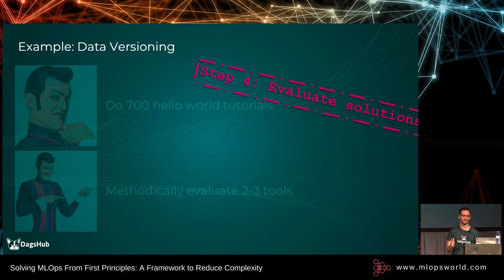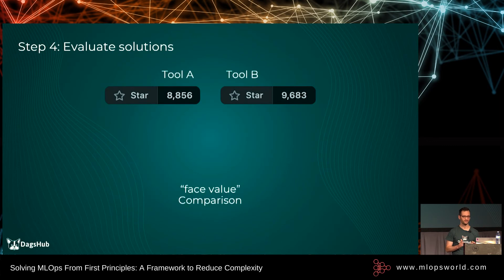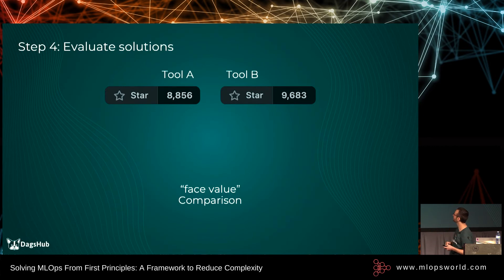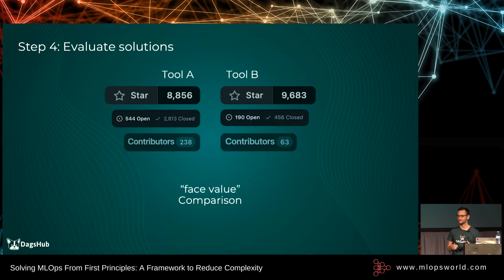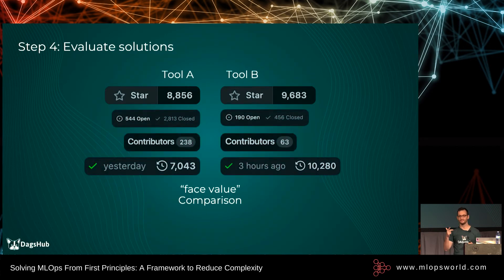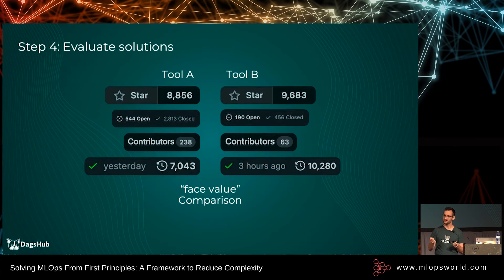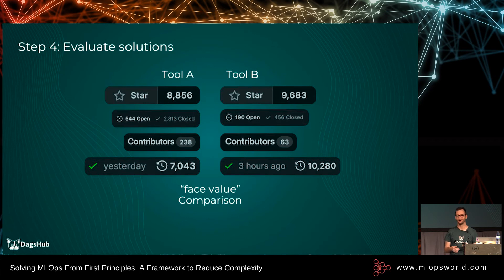When evaluating solutions, especially open source ones, people often go directly to GitHub stars. You might look at two tools and say tool B is better because it has more stars — but obviously this is not the best indication. Latest commit time, latest release time, number of contributors, number of forks, PRs, and issues are arguably much more relevant than stars. For issues, what is the speed of response? If there's an issue from four months ago that got no response, that could be a red flag that the tool is either no longer supported or that support isn't as fast as you'd want. Open source people are doing a lot of things for free, so take it at your own risk, but don't just say 'this tool has more stars so that's the one we go with.'